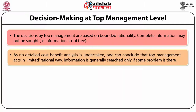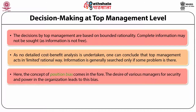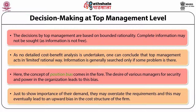As no detailed cost-benefit analysis is undertaken, one can conclude that top management acts in a limited rational way. Information is generally searched only if some problem arises. Here the concept of position bias comes to the fore. The decision of various managers for security and power in the organization leads to this bias. Just to show the importance of their demand, they may overstate requirements, which may eventually lead to an upward bias in the cost structure of the firm. Furthermore, information may be distorted or under-reported.